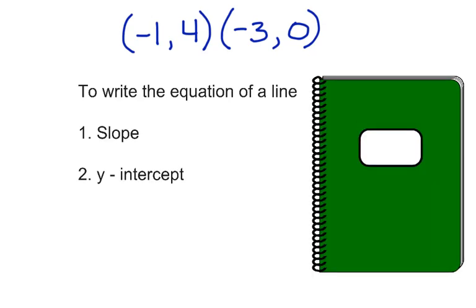Do you know how to write the equation of a line that passes through two given points? Let's take a look. Before we can work with these ordered pairs, you must remember that to write the equation of a line, you need the slope and the y-intercept. Take a minute to make a note of that.